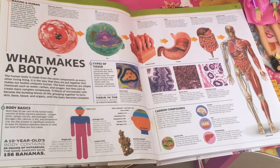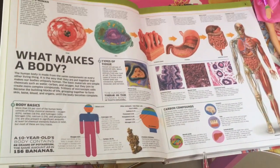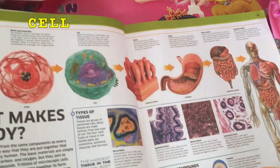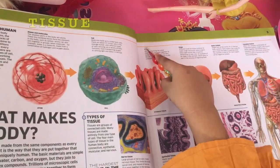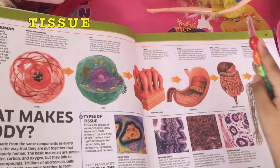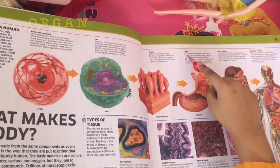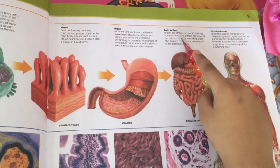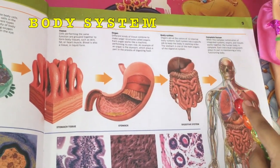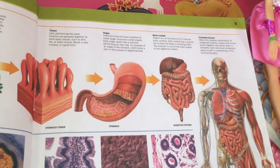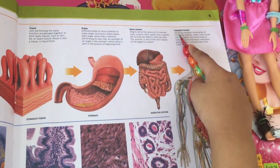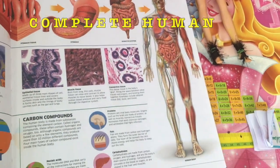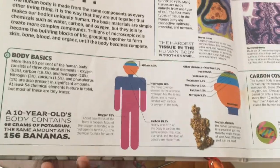This is a page about what makes a body. An atom becomes into a cell, and then it becomes tissue — it's called stomach tissue here. This is an organ, and it's called the stomach. This is a body system, and this is called the digestive system. And this is the full human body. You see, our body is made with a lot of elements.